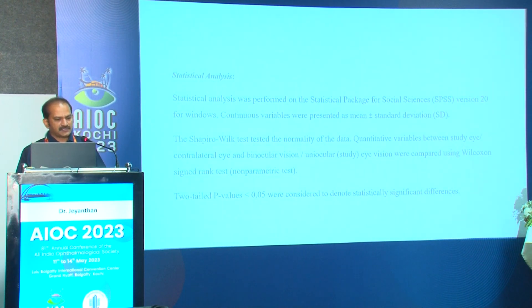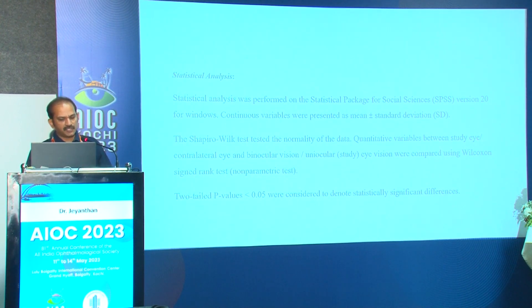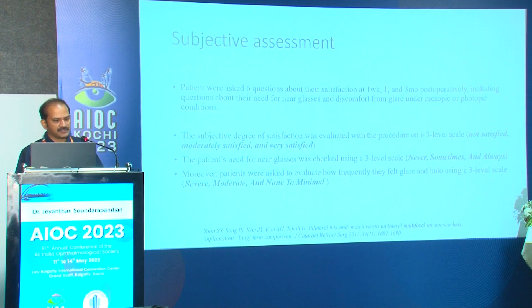Statistical analysis was performed using SPSS version 20 for Windows. Continuous variables were presented as mean plus or minus standard deviation. The Shapiro-Wilk test assessed normality. Quantitative variables between the study eye, contralateral eye, and binocular/monocular vision were compared using the Wilcoxon signed-rank test. A two-tailed p-value less than 0.05 was considered statistically significant.